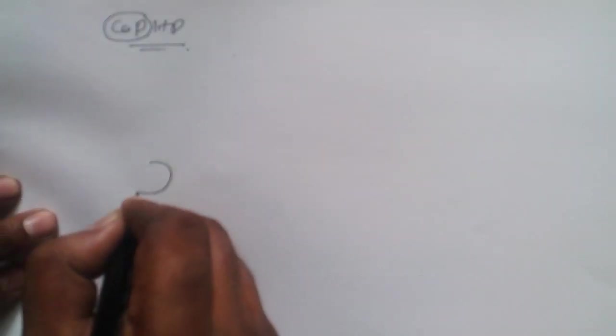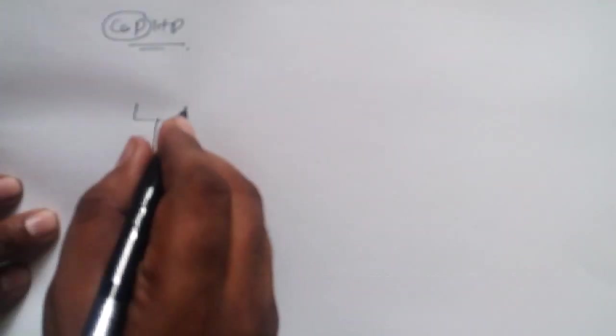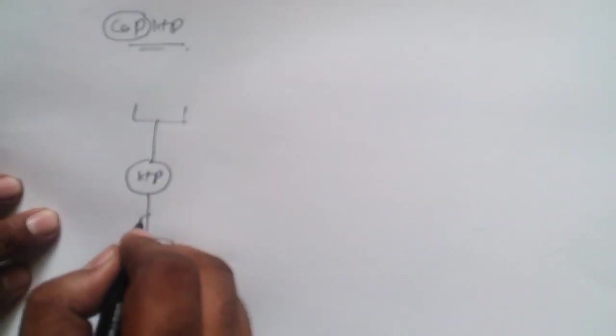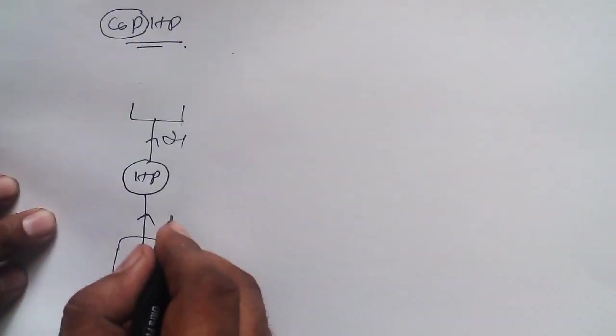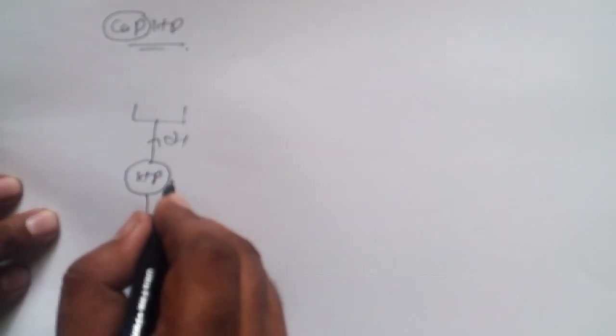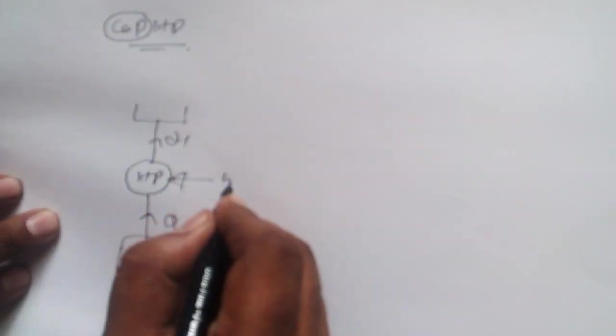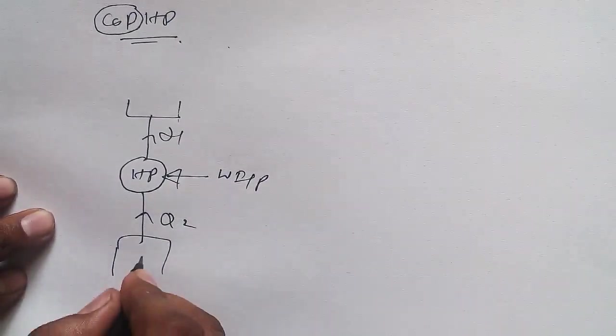Now we are going to draw a block diagram of heat pump. Here is a diagram - this is a heat pump and we are having source and sinks, with direction like this: Q1, Q2, and then we have to give work input. Let's say this is T2 and this is T1.